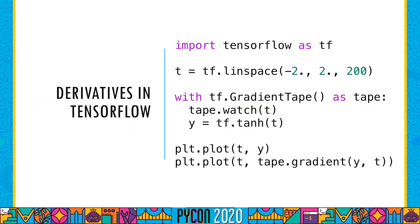I'm mainly using JAX today for code snippets and also for generating all the illustrations and animations, since it works great for these examples. But Python is a big ecosystem, and two other popular libraries implementing automatic differentiation are TensorFlow and PyTorch. These libraries target different use cases, and so the code looks somewhat different. In particular, taking the derivative of hyperbolic tangent looks a little awkward in both TensorFlow and PyTorch. These are two fantastic and extremely powerful libraries, and I hope you try them out, especially if you're interested in deep learning, which is a place where they really shine.